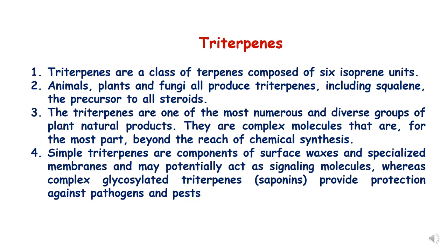Triterpenes are a class of terpenes composed of six isoprene units. Animals, plants, and fungi all produce triterpenes, which includes squalene — the precursor of all steroids. Triterpenes are one of the most numerous and diverse groups of plant natural products; they are complex molecules largely beyond the reach of chemical synthesis.